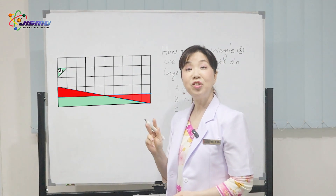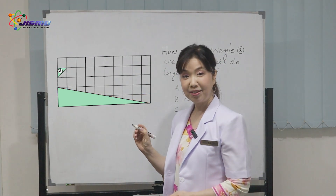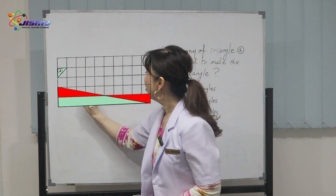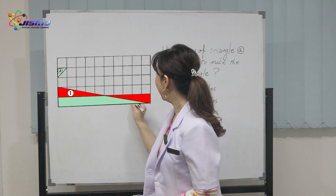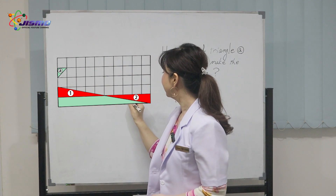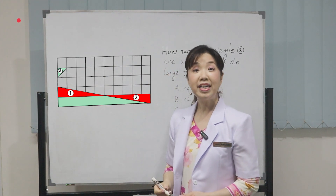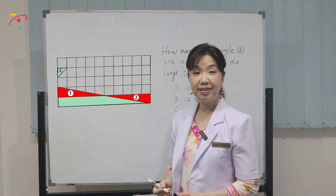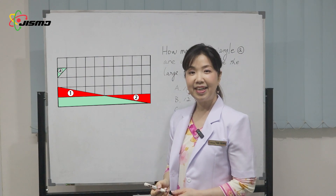Can you see two red shaded triangles? One and two. They are right-angled triangles and identical.